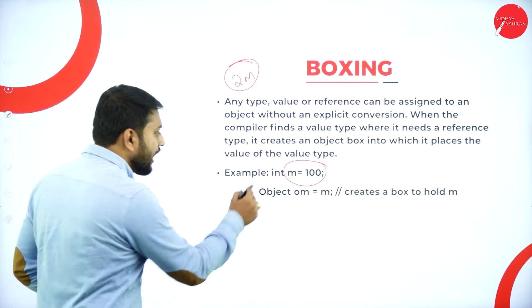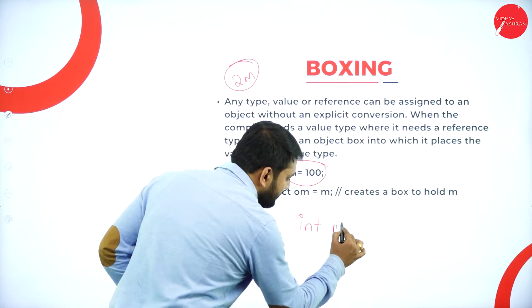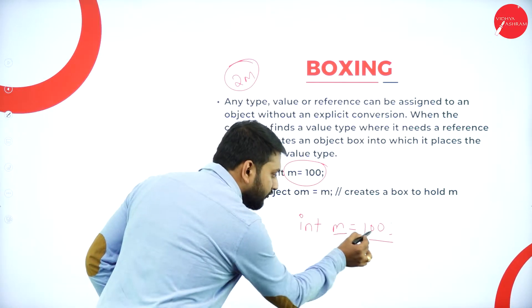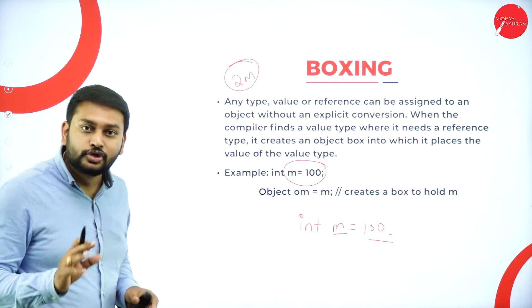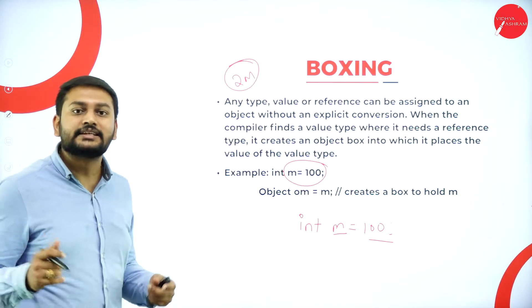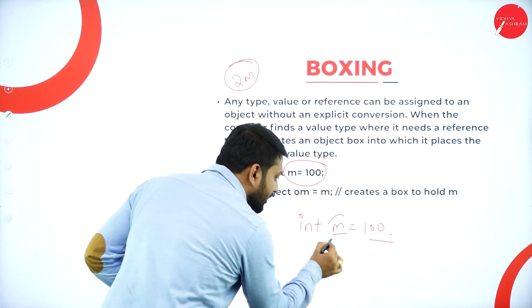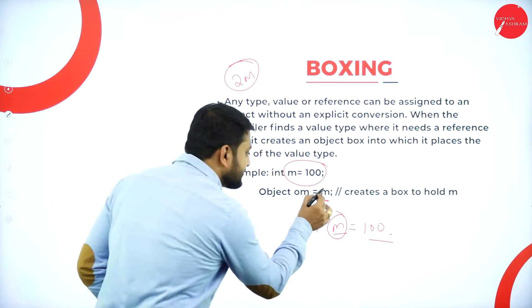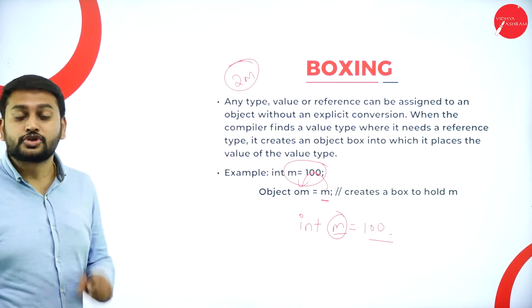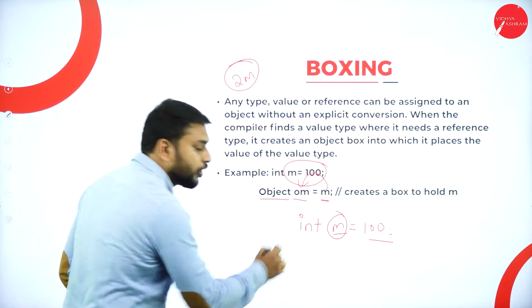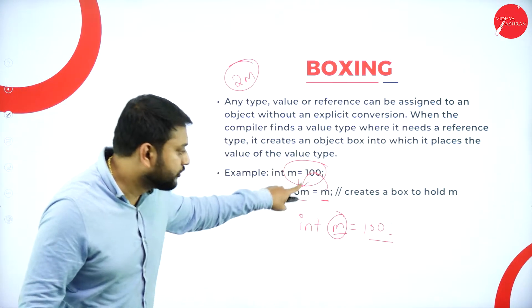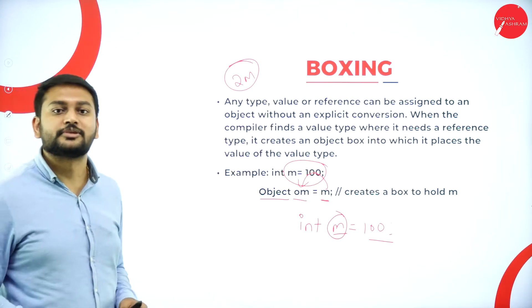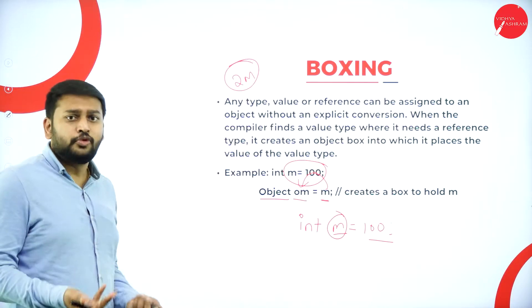For example, imagine I have declared: int m = 100. This is the value I have. The value in m is 100 — you can treat that 100 as a value type. Now I will be converting m into an object. I am creating an object — the name of the object is om. I am storing the value in the object. By doing this, I am converting the value type into object type. That is boxing.